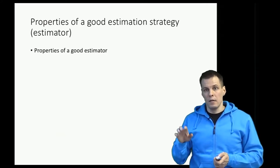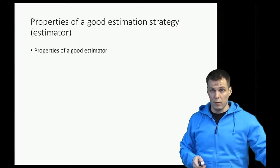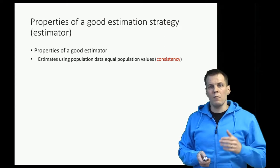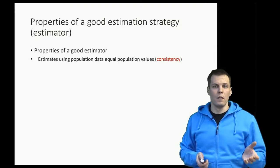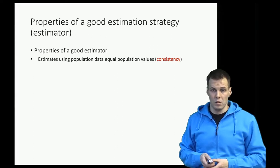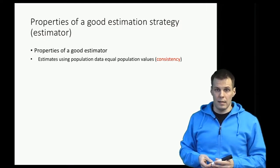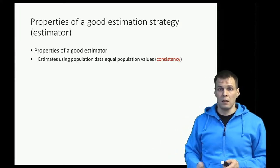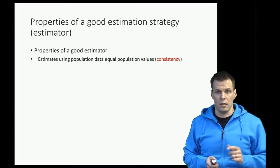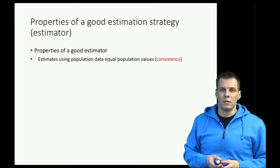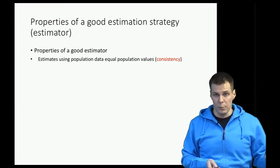Estimators can have certain properties. An estimator is any strategy or calculation you apply to your sample to get one value that estimates the population. One minimum quality every useful estimator must have is consistency — meaning that if we increase the sample size, our estimates get better. The sample mean is a consistent estimator. Consistency also requires that if we apply our strategy to the full population we get the correct population result. Consistency guarantees that a study improves as sample size increases.